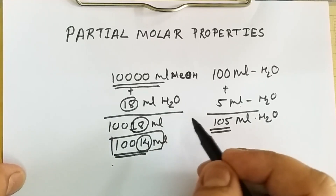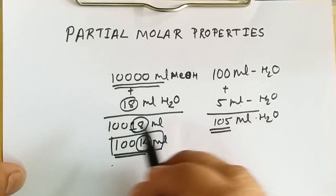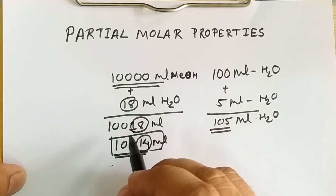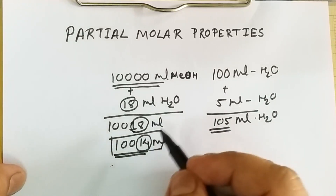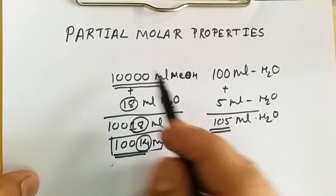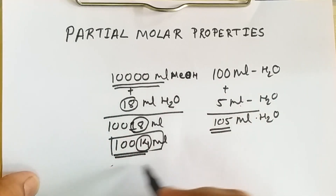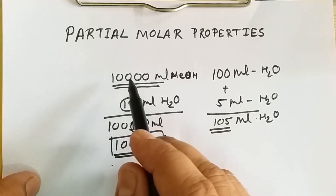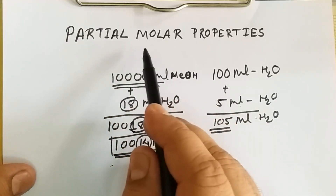So when we add a small quantity of one constituent to a larger amount of another constituent — or when adding a small amount of solute to a larger amount of solvent — there is a net change in the property, and that change is known as partial molar properties. There are several extensive properties like volume, free energy, heat content, and heat capacity, which depend on the number of moles. In a binary mixture, as we change the composition, all those properties will also change.